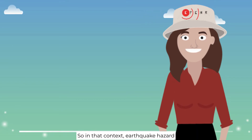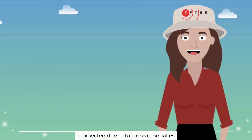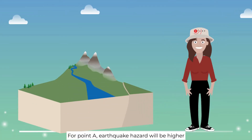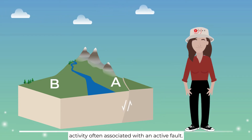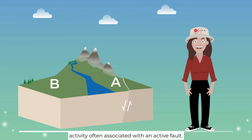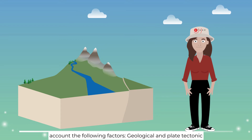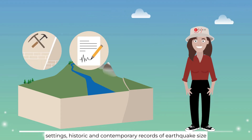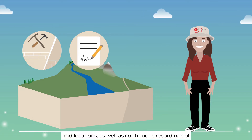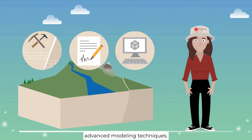In that context, earthquake hazard describes what level of ground shaking is expected due to future earthquakes. For point A, earthquake hazard will be higher than point B because of the underlying seismic activity, often associated with an active fault. When we assess earthquake hazard, we take into account geological and plate tectonic settings, historic and contemporary records of earthquake size and locations, as well as continuous recordings of earthquake effects — all combined using advanced modeling techniques.